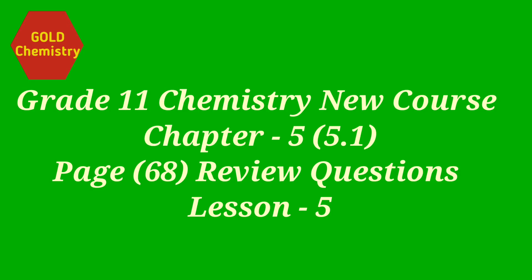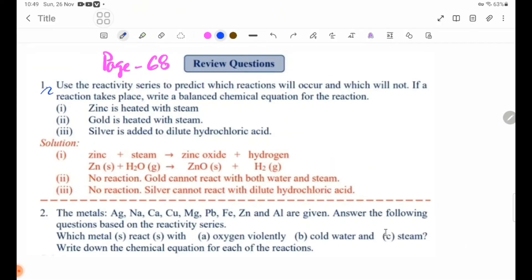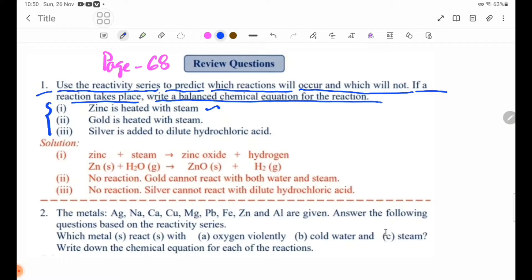Hello everyone. Today's lesson is grade 11 chemistry theory, chapter 5, page number 68 review questions. Review question number one: use the reactivity series to predict which reactions will occur and which will not. If a reaction takes place, write a balanced chemical equation for the reaction.